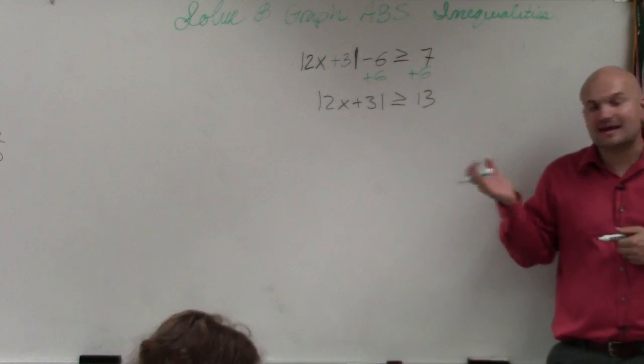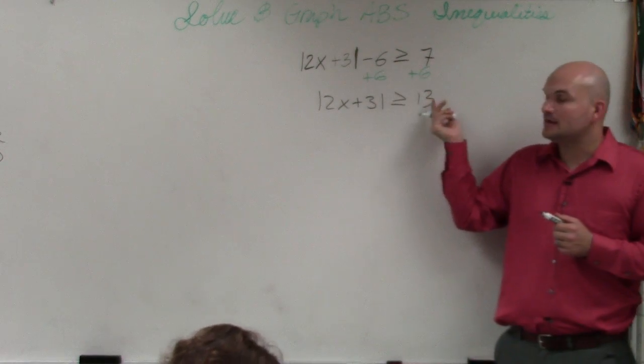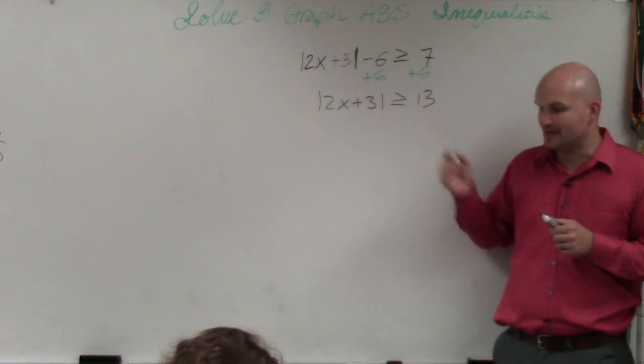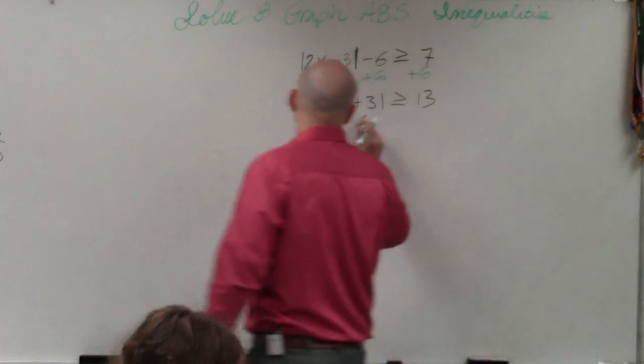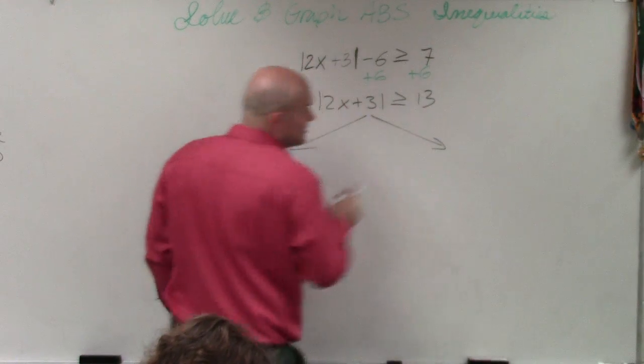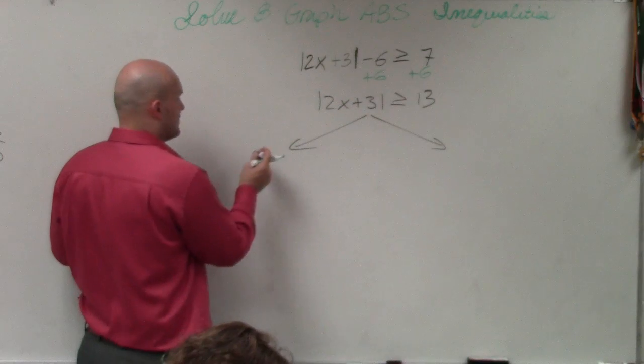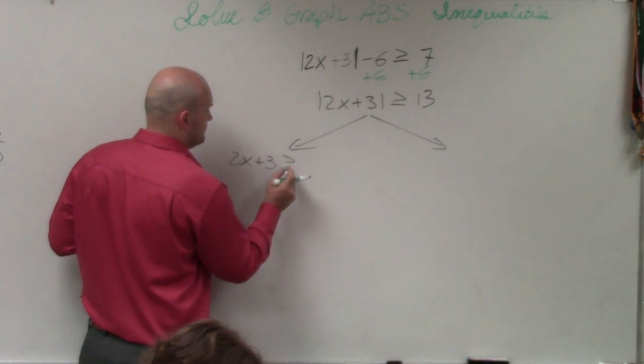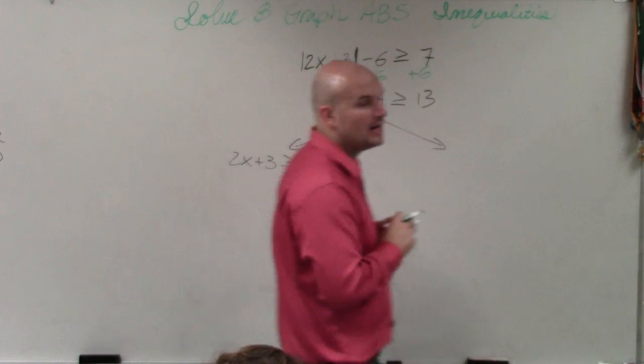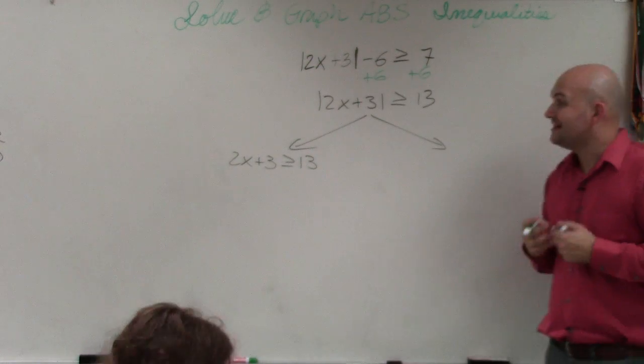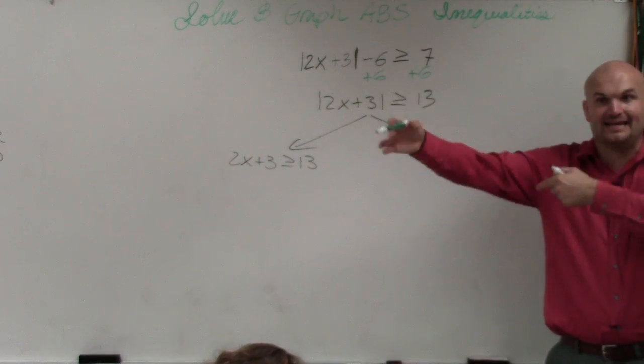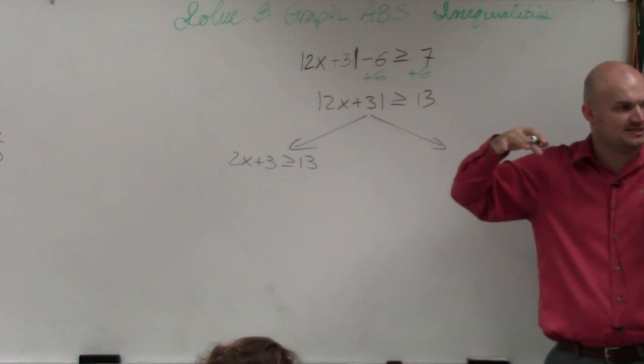Now, when we have the absolute value set equal to another quantity, or not equal to, but using inequality for another quantity, now we can create our two cases, just like we did with the equations. So we'll write the inequality as it is, without any absolute value symbol. Then we'll write the inequality with the negation, right? Remember how we negated, made it the opposite sign, the other case?